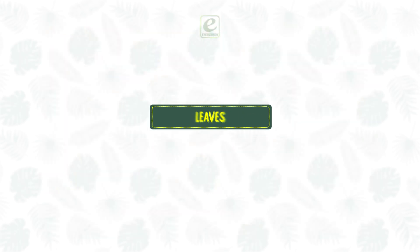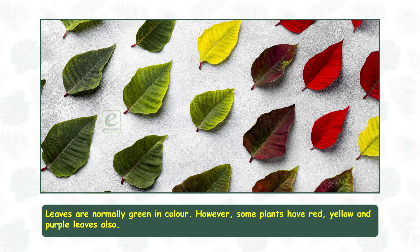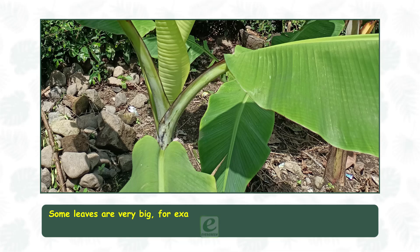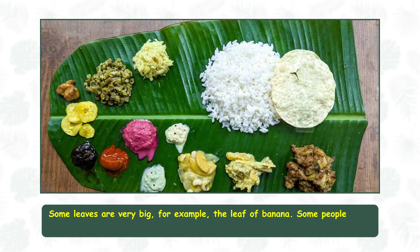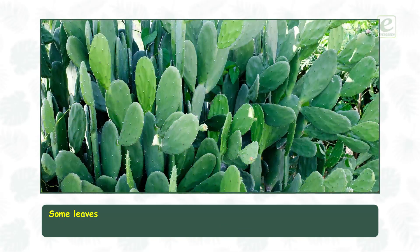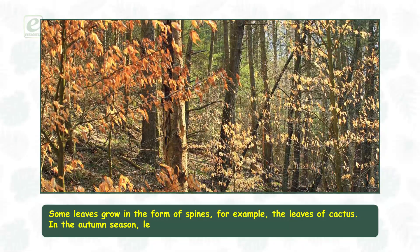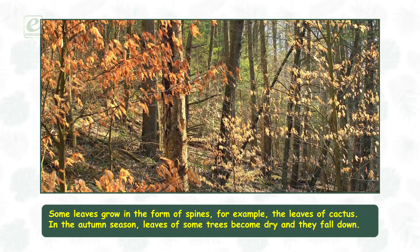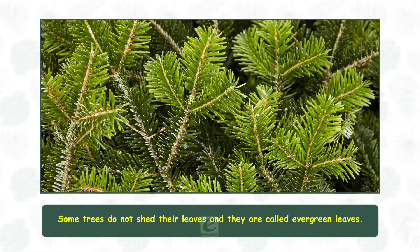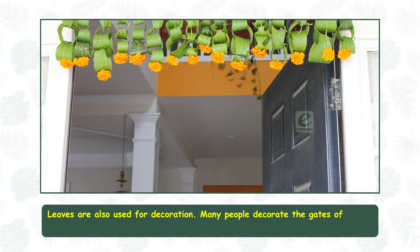Leaves. Leaves are normally green in color. However, some plants have red, yellow, and purple leaves also. The shape and size of leaves is different in different plants. Some leaves are very big — for example, the leaf of banana. Some people serve food on the leaves of banana. The shape of a maple leaf is very common. Some leaves grow in the form of spines, for example the leaves of cactus. In the autumn season, leaves of some trees become dry and they fall down. Some trees do not shed their leaves and they are called evergreen trees. Leaves are also used for decoration. Many people decorate the gates of houses with mango leaves.